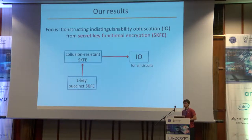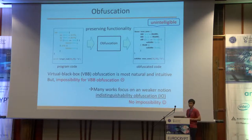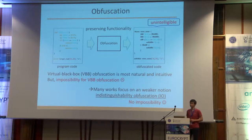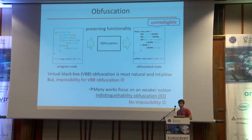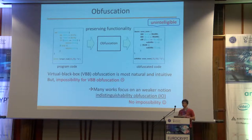I will start with what is obfuscation. Obfuscation aims to turn programs unintelligible while preserving functionality. The most natural and intuitive definition is virtual black box obfuscation, or VBB obfuscation. However, it is known that it's impossible to construct VBB obfuscation for all circuits. So many works have focused on a weaker variant called indistinguishability obfuscation, or I.O. No impossibility results for I.O. for all circuits are known so far.